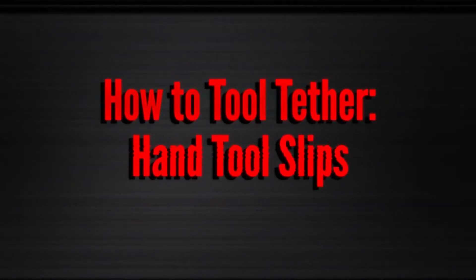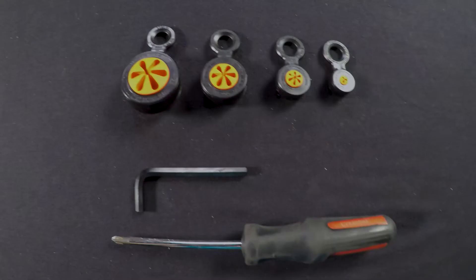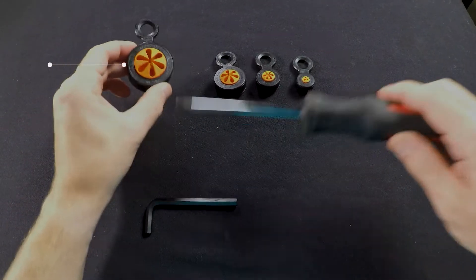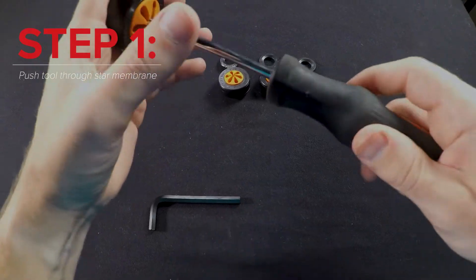The second tool tethering method is hand tool slips. These are simple quick tethers and are mainly used for hand tools like hex keys and screwdrivers. To use a hand tool slip, simply push your hand tool through the star membrane of the slip.